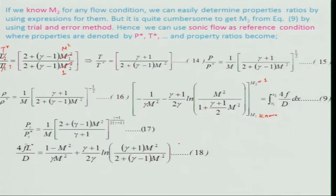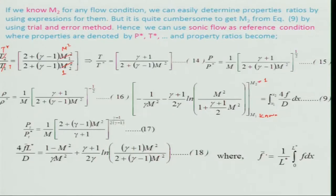From integrating equation 8 to the sonic condition, we get: 4F*L*/d = (1 − M²)/(gamma*M²) + (gamma+1)/(2*gamma) * ln[(gamma+1)*M² / (2*(1 + (gamma−1)/2 * M²))], where F is the friction factor integrated from 0 to L*. The friction factor depends on Reynolds number, Mach number, whether the flow is laminar or turbulent, and surface roughness.